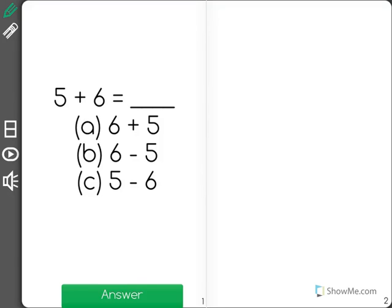This math problem says 5 plus 6 equals A, 6 plus 5, B, 6 minus 5, or C, 5 minus 6. I'm going to get out some counters to help me show this problem.